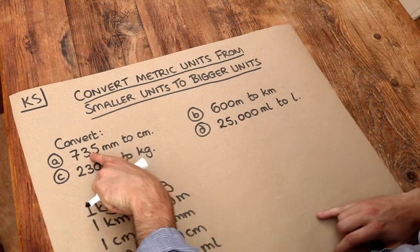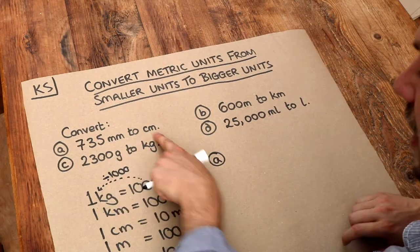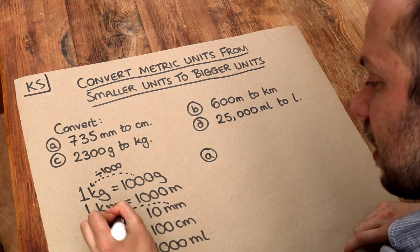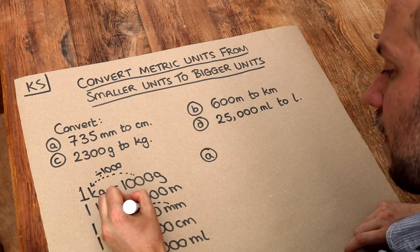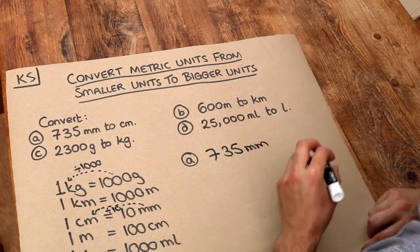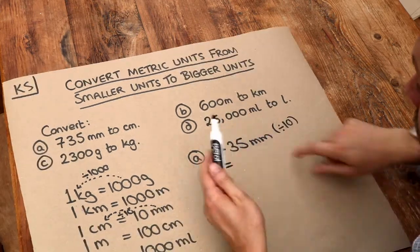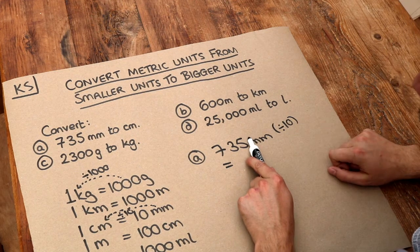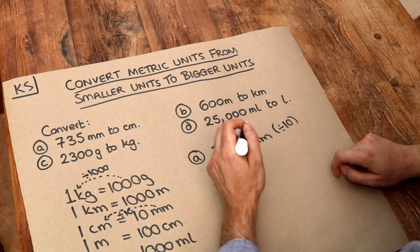Let's take for example millimeters to centimeters in part A. To go from millimeters to centimeters, 10 is getting 10 times smaller to get to one. So therefore, the 735 millimeters — we have to divide it by 10. The decimal point is currently after the five, the units digit. If we divide by 10, it moves once to the left and we get 73.5 centimeters.